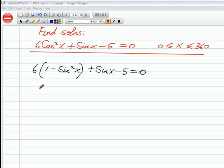Now it turns out to be some straightforward algebra steps. Let's get rid of the bracket, so 6 into 1 gives you 6 - 6sin²x, and we've got a plus sinx.